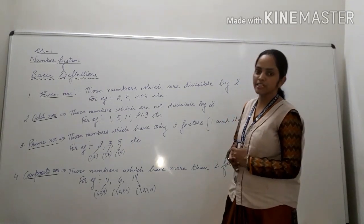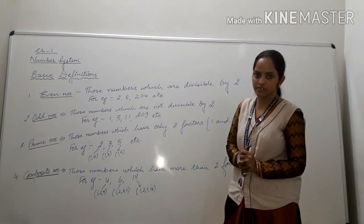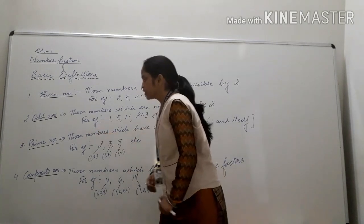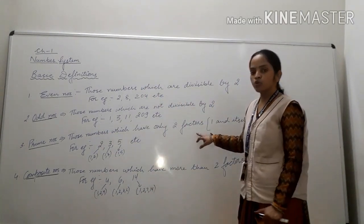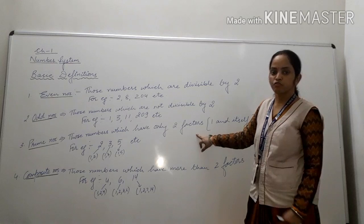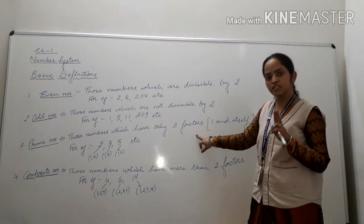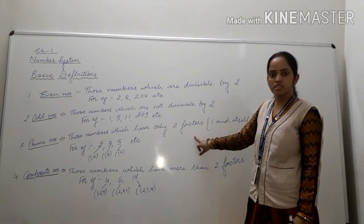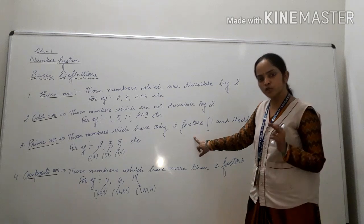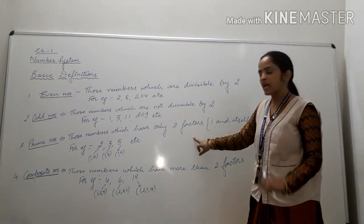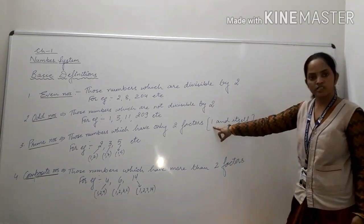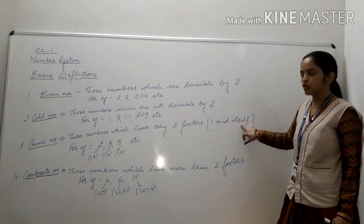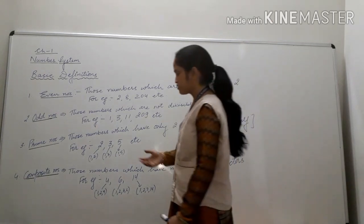We have many odd numbers as well as many even numbers. Next is prime numbers. Those numbers which have only 2 factors — or we can also say, those numbers which are divisible by only 2 numbers: by 1 and by itself — are known as prime numbers.